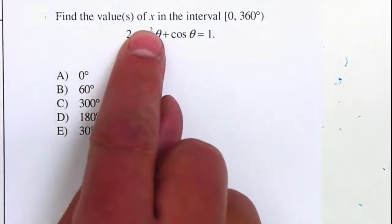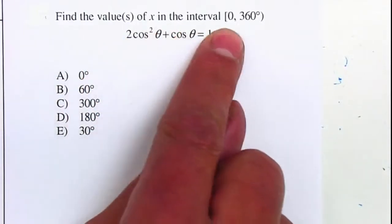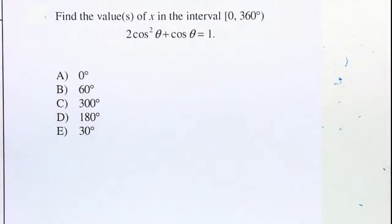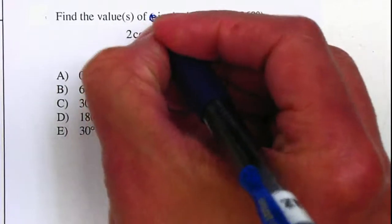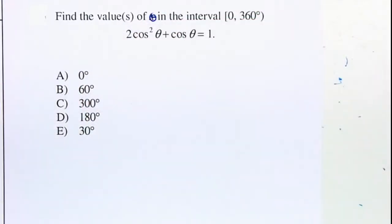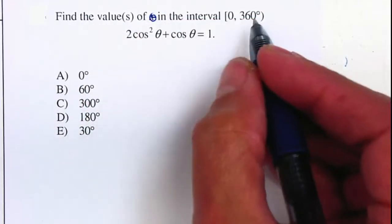Find the value or values of theta in the interval between 0 and 360 degrees. This should be find the values of theta since we're working with degrees.